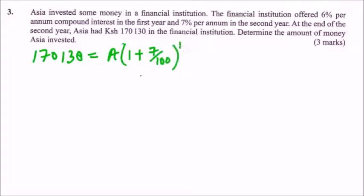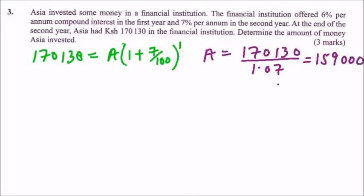So we say this is to power 1. Once we get that, our A is equals to 170,130 divided by 1.07, and this will give you 159,000 using your calculator.